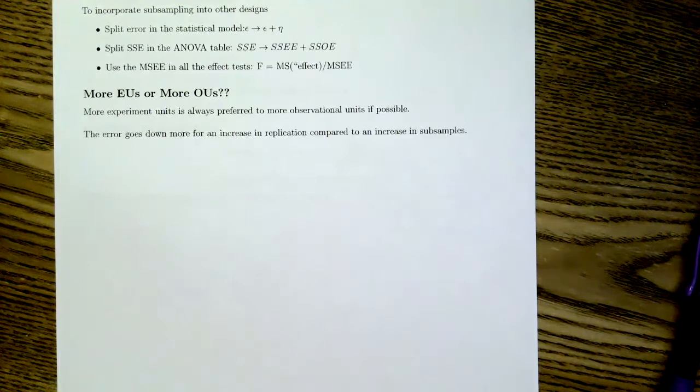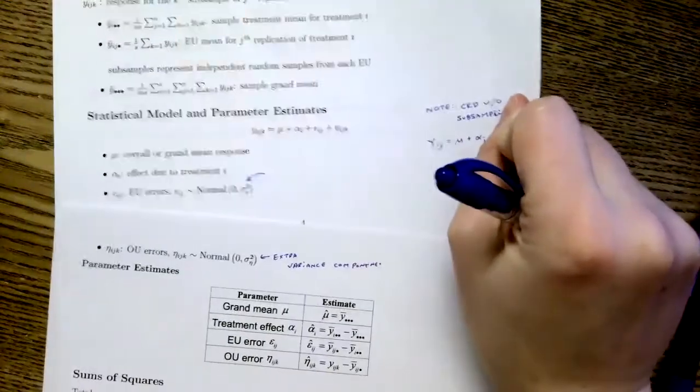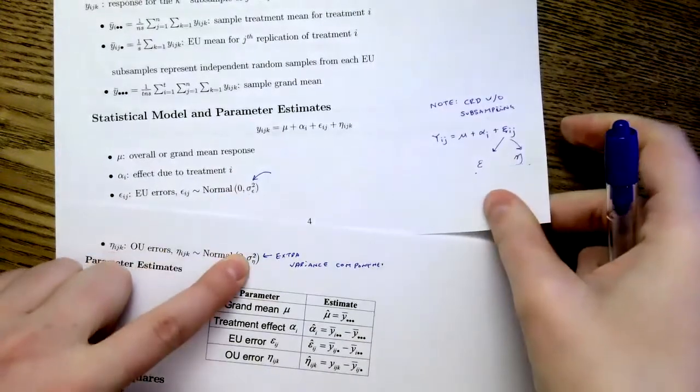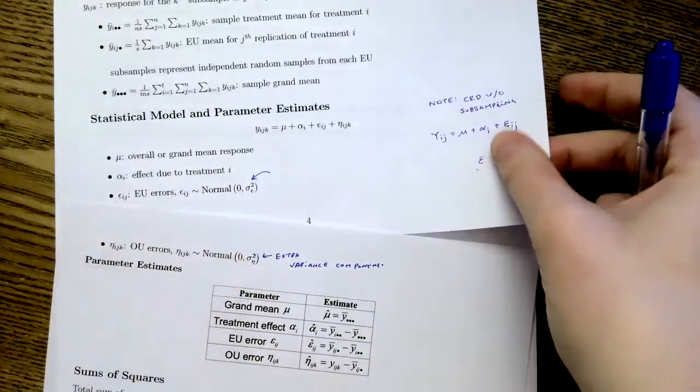In our next lecture, we're going to look at variance component estimation. So how do we actually estimate these two terms right here? How do we estimate sigma squared epsilon and sigma squared eta? That's going to be our next lecture.